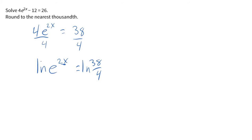Now, natural log of e, those are inverses. They wipe each other out. And we have 2x equals ln of 38 fourths. And now, let's just divide by 2 to get x by itself.